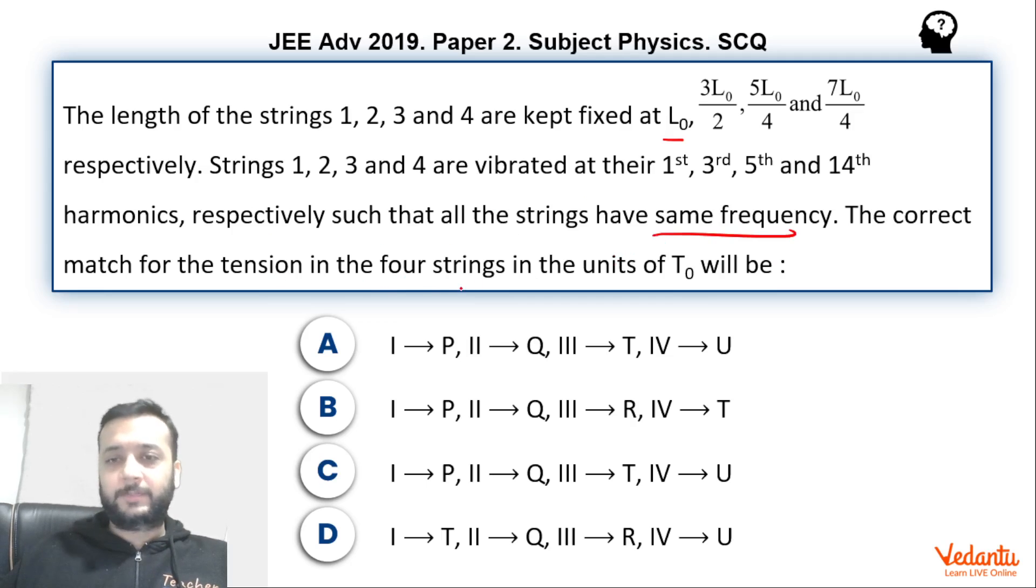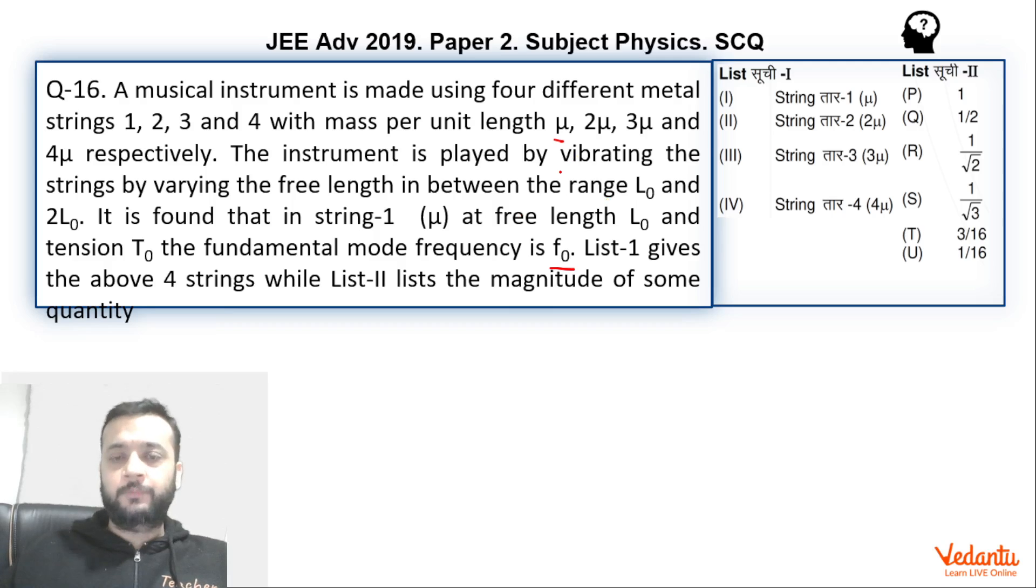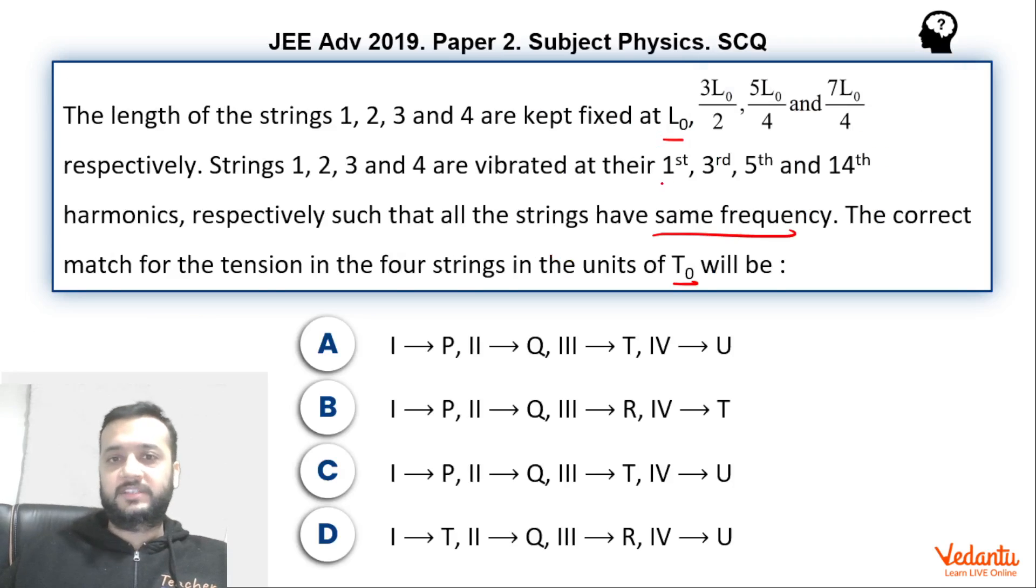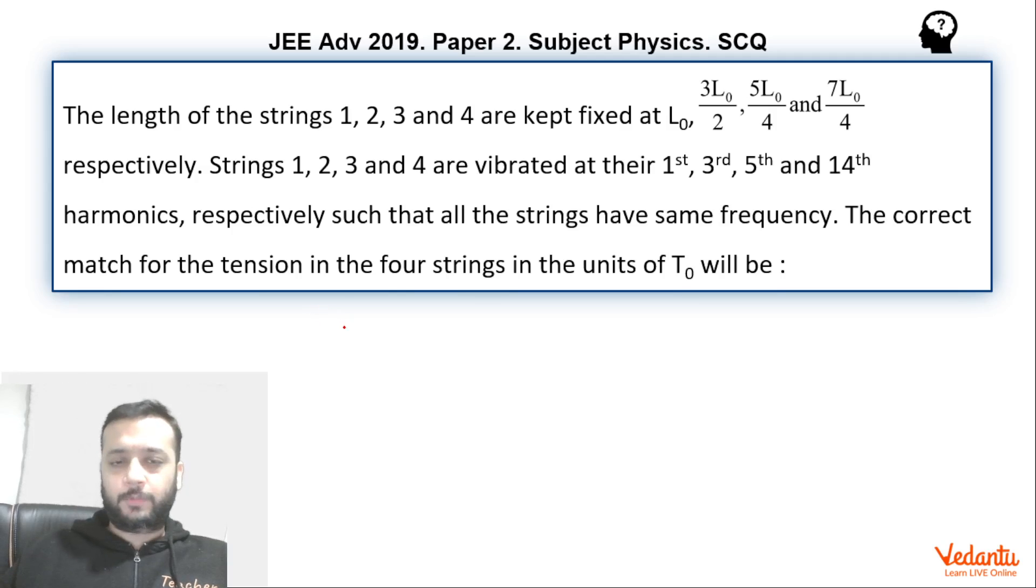We have to represent the tension in each string in terms of T0. T0 is the tension in the first string which has a length of L0, linear mass density of mu, and which is in the first harmonic. The question is fairly simple. We just have to write the data properly.